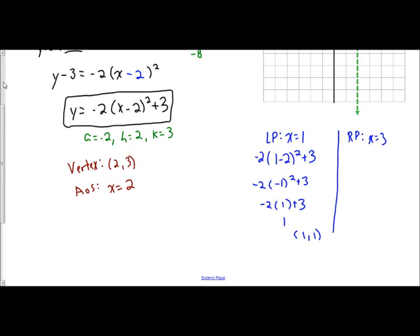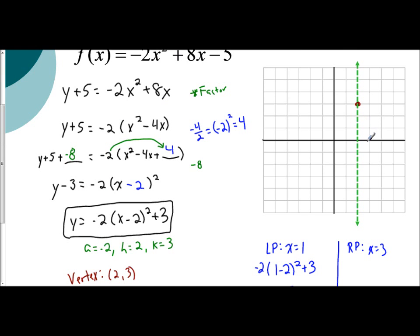So I go up to my graph and plot the coordinate (1, 1). Using reflection — it's one unit away from the axis of symmetry — so I go one unit in the other direction, and there's the right point.